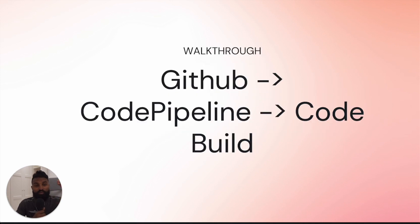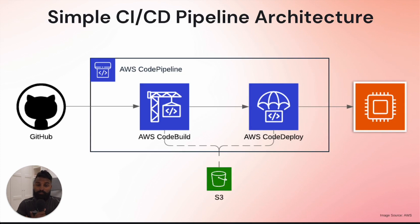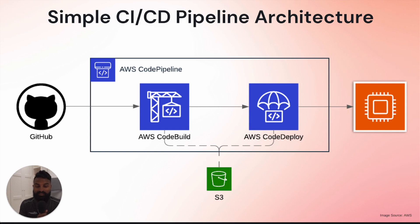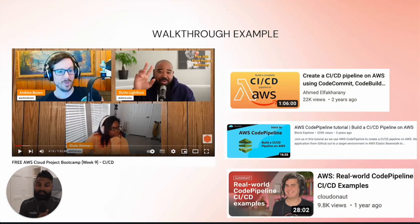I was going to do a walkthrough of a really simple GitHub to CodePipeline and CodeBuild setup. The architecture was going to be simple: my code in GitHub, with CodePipeline listening for any changes or commits. Once CodePipeline picks up the change, it uses CodeBuild to store the changes — in my case, a package stored into an S3 bucket. The moment there's an S3 bucket change, CodePipeline picks it up, does another CodeBuild action, and deploys it into AWS. However, Andrew Brown and others have already done great walkthroughs, so I would refer to those videos for how to deploy a CI-CD pipeline using AWS.